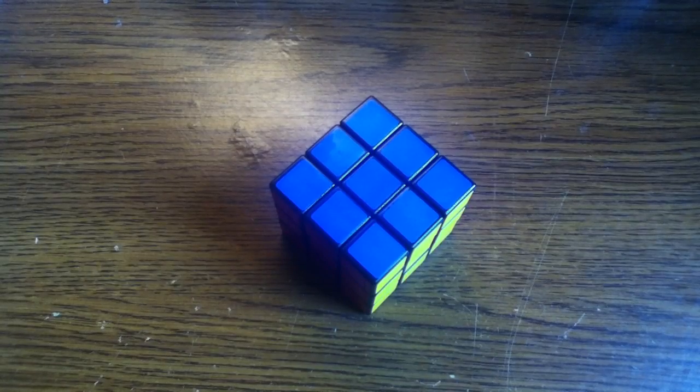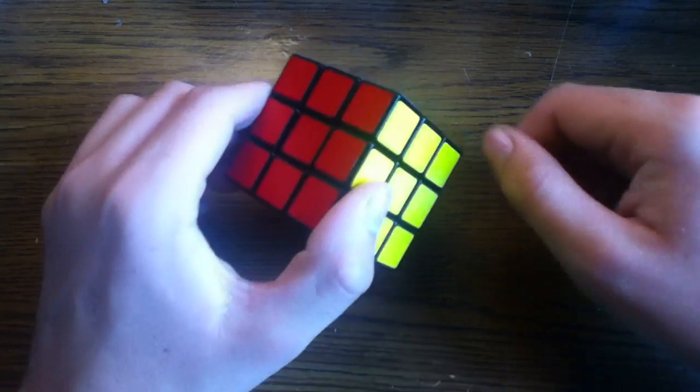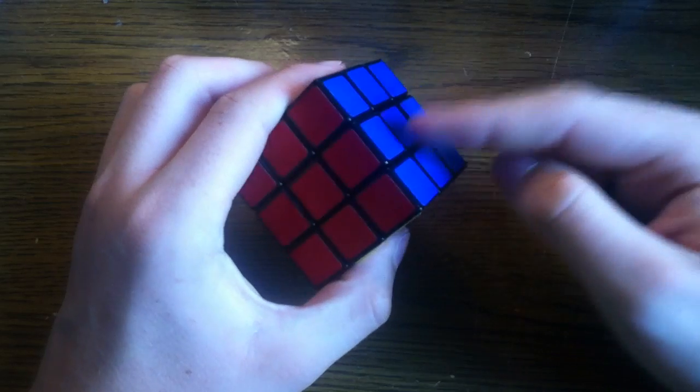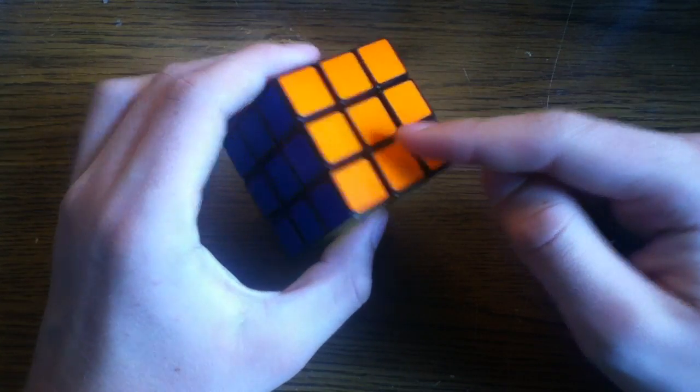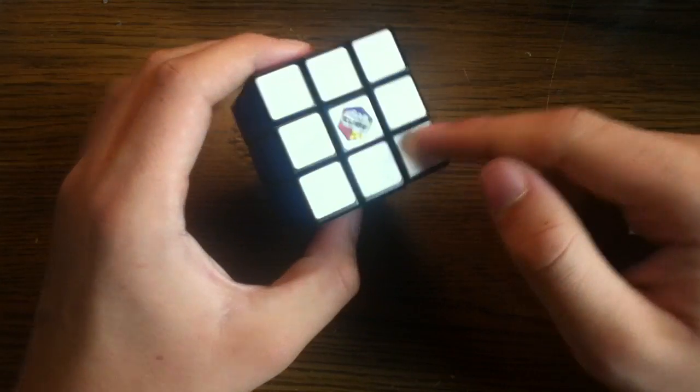An important thing to remember when you actually go about solving a Rubik's Cube is that the sides on most Rubik's Cubes are oriented the same way. For example, the blue side is always opposite the green side, the orange side is always opposite the red side, and the yellow side is always opposite the white side.